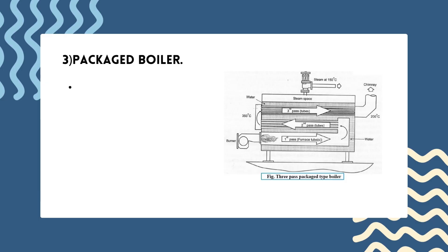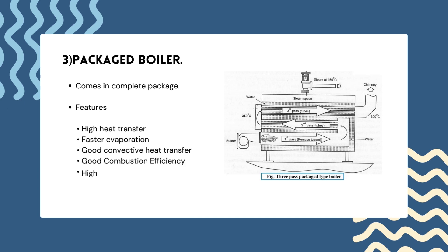The packaged boiler is so called because it comes as a complete package once delivered to a site. It requires only the steam and water pipework, fuel supply and electrical connections to become operational. Packaged boilers are generally of a shell type with a fire tube design to achieve high heat transfer rates by both radiation and convection. They are used for heating and as steam generators for small power purposes such as self-powered industrial plants, but cannot be used for large-scale power plants due to their size and lack of efficiency.